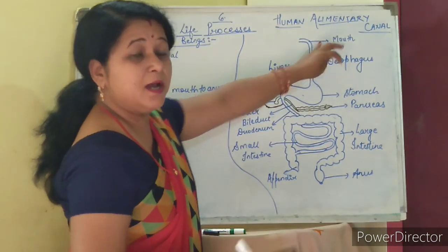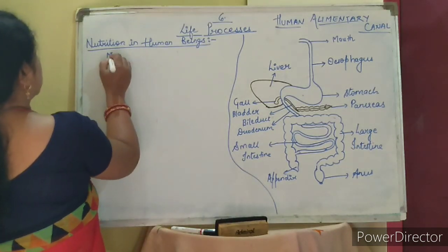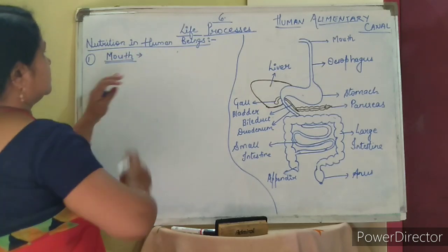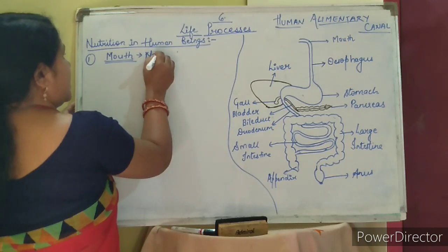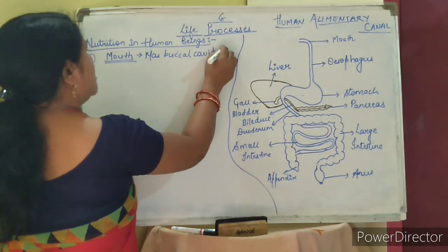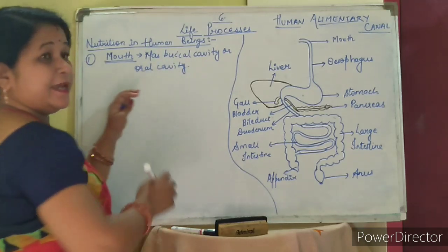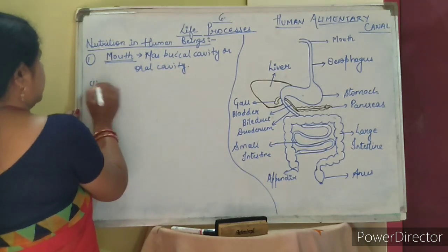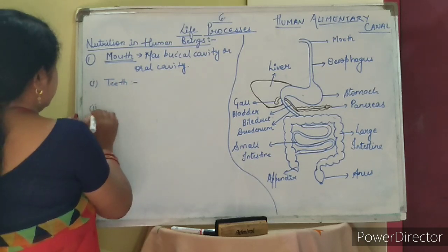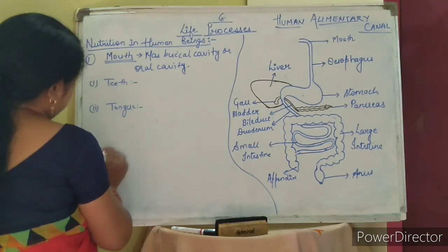Now we will start from the mouth. The mouth is also known as the buccal cavity, or oral cavity. It consists of three parts: first is teeth, second is tongue, and the third is salivary glands.